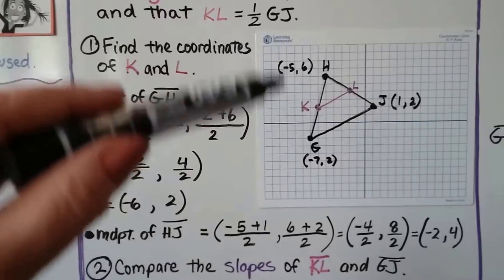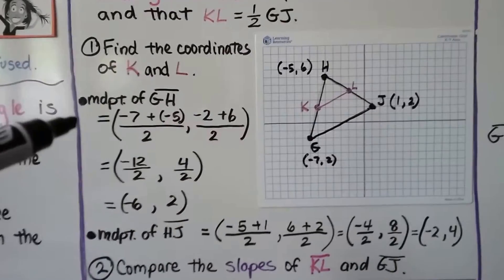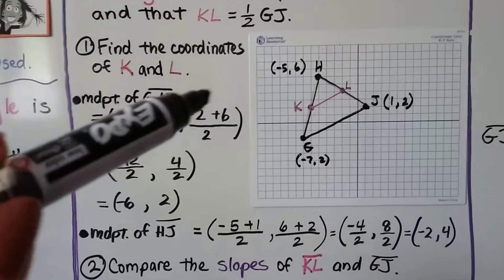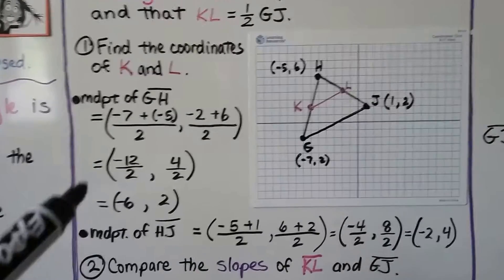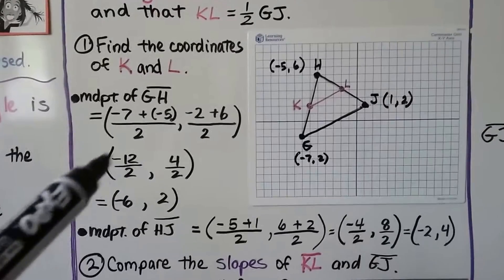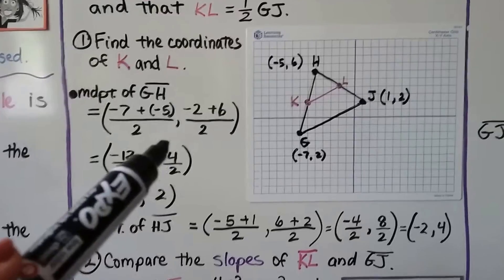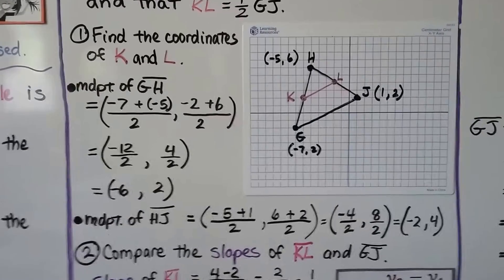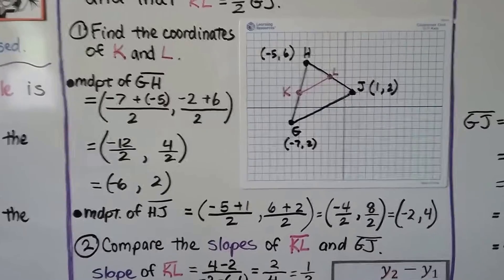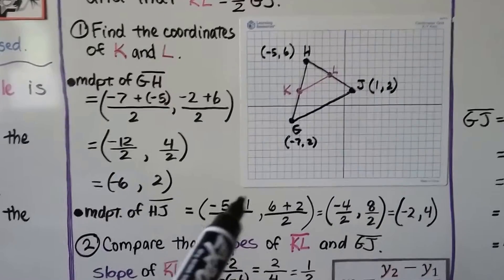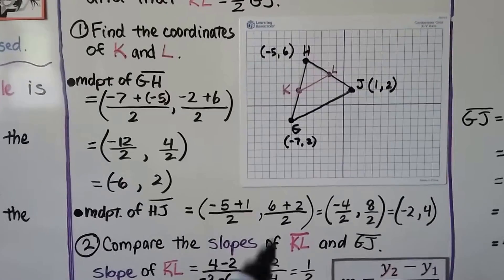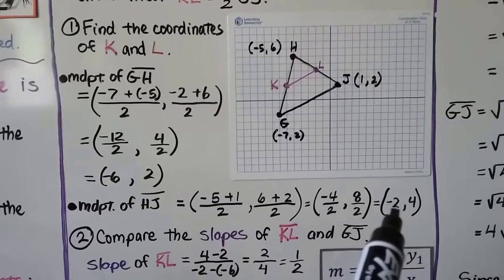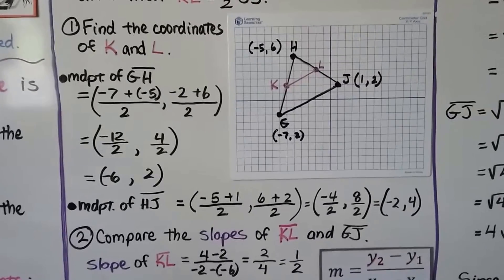We've got the coordinates for G and H. We do negative 7 plus negative 5 divided by 2, and negative 2 plus 6 divided by 2. That gives us negative 12 divided by 2 for x and 4 divided by 2 for y, which is negative 6 for x and 2 for y. We do the same thing for HJ: negative 5 plus 1 divided by 2 and 6 plus 2 divided by 2, giving us negative 2 for x and 4 for y.